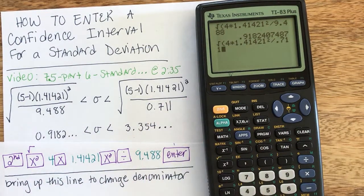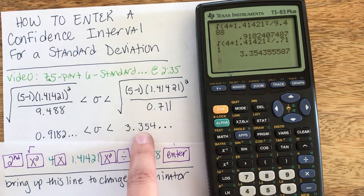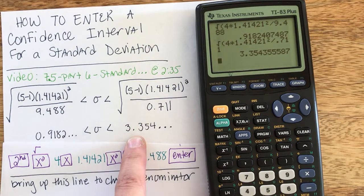I don't need the lead zero. And if I hit enter, I get my upper bound of 3.35.